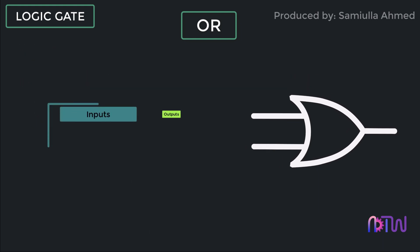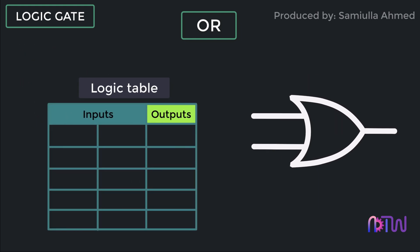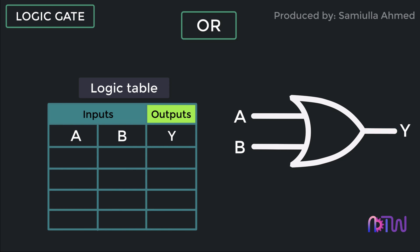The table representing the inputs and outputs of a logic gate is called a truth table or a logic table. Since the OR gate has two inputs, we can name them A and B, and the output we will name Y. There can be four possible input combinations. The first input can be A equals zero and B equals zero. The logic behind the OR gate's output is that it shows whether there is a signal in input A or B.